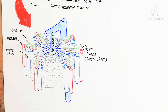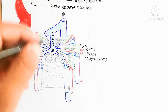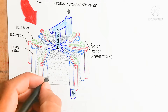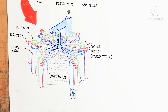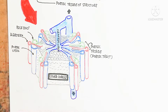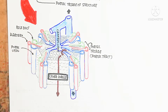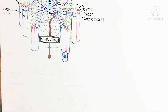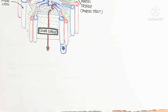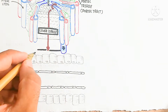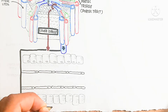The portal triad is also known as the portal tract. An important feature is that it also includes the lymphatic system — the lymph, artery, and vein collect fluid and move it into the hepatic vein, also known as the central vein.